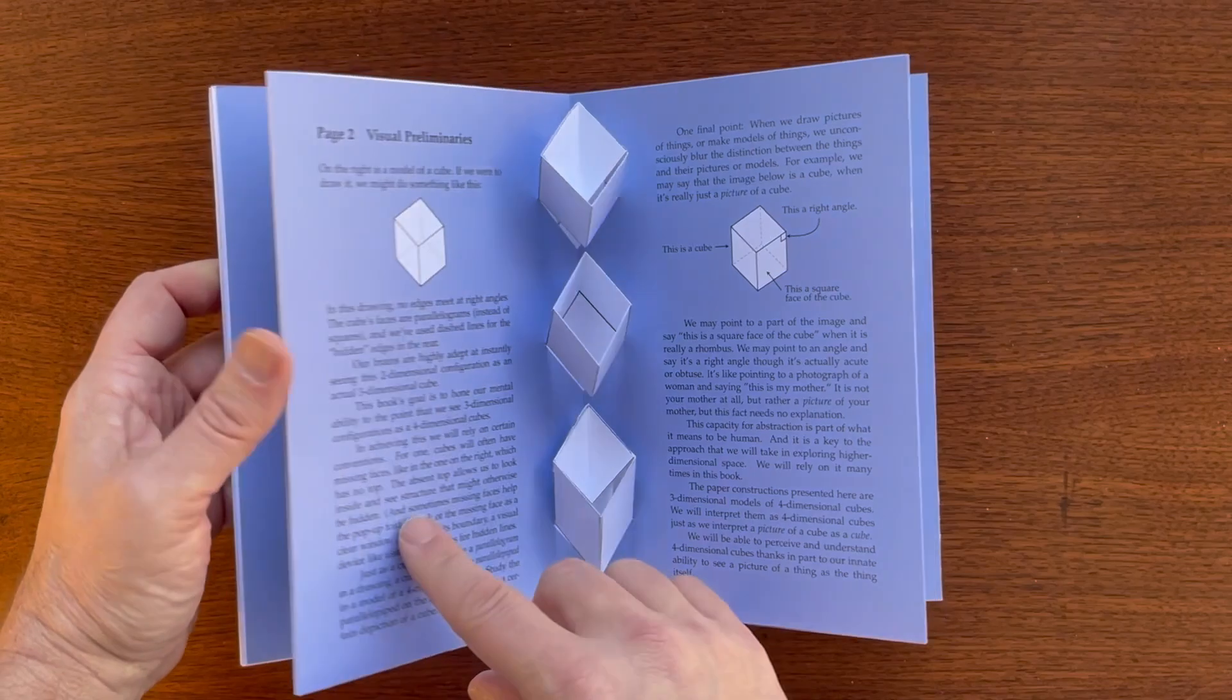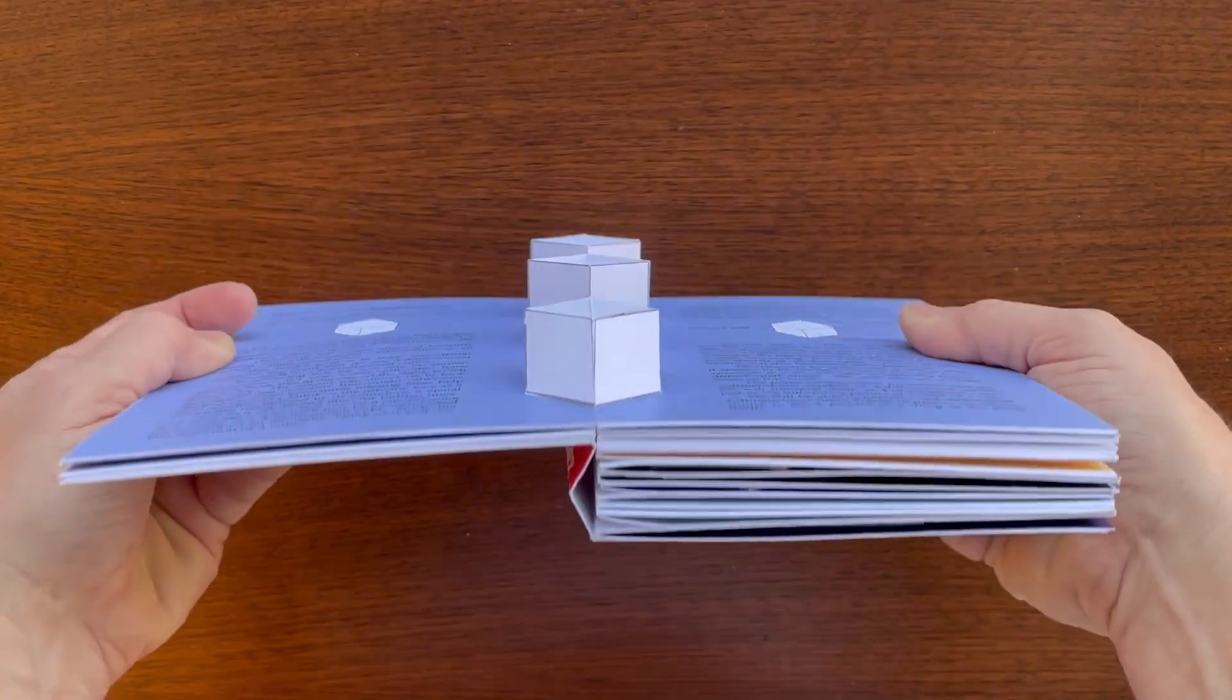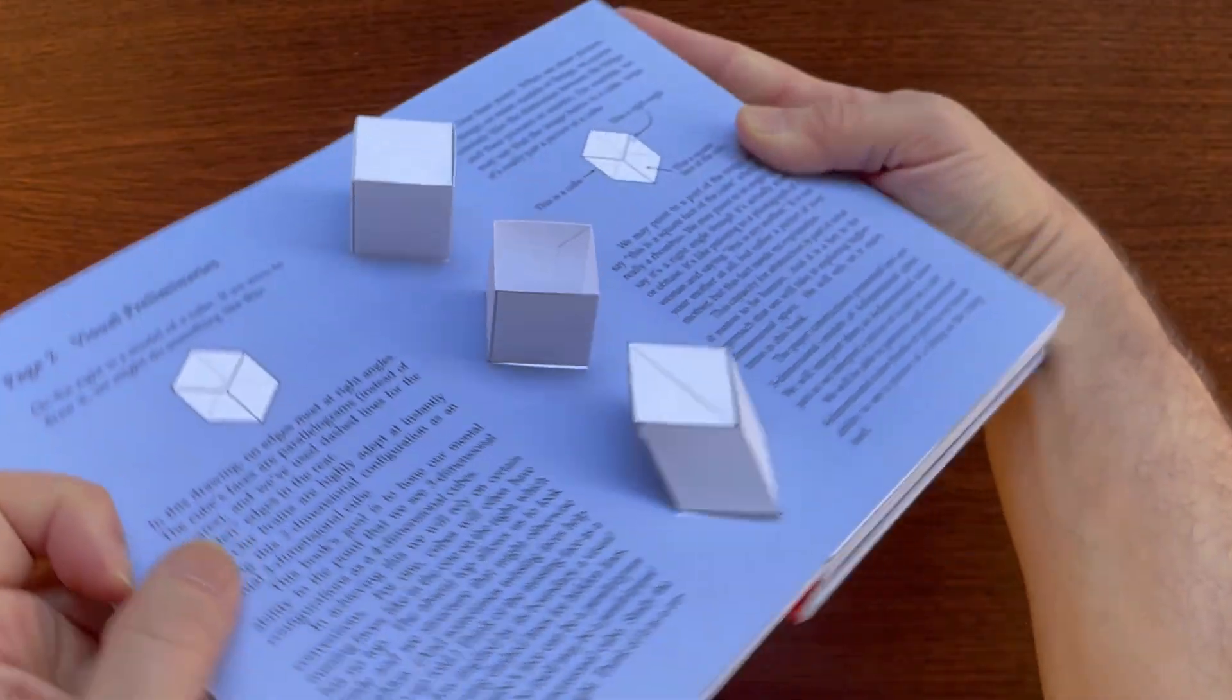Often, we'll render cubes with faces absent to reveal structure, and we'll get used to rendering and reading cubes obliquely, like the one at the bottom.